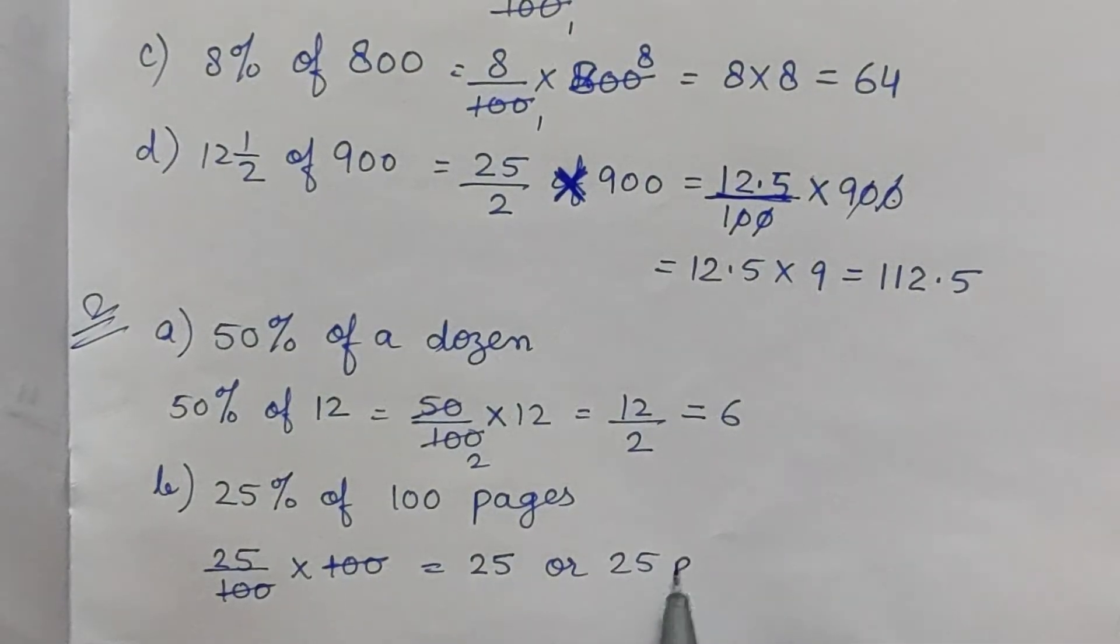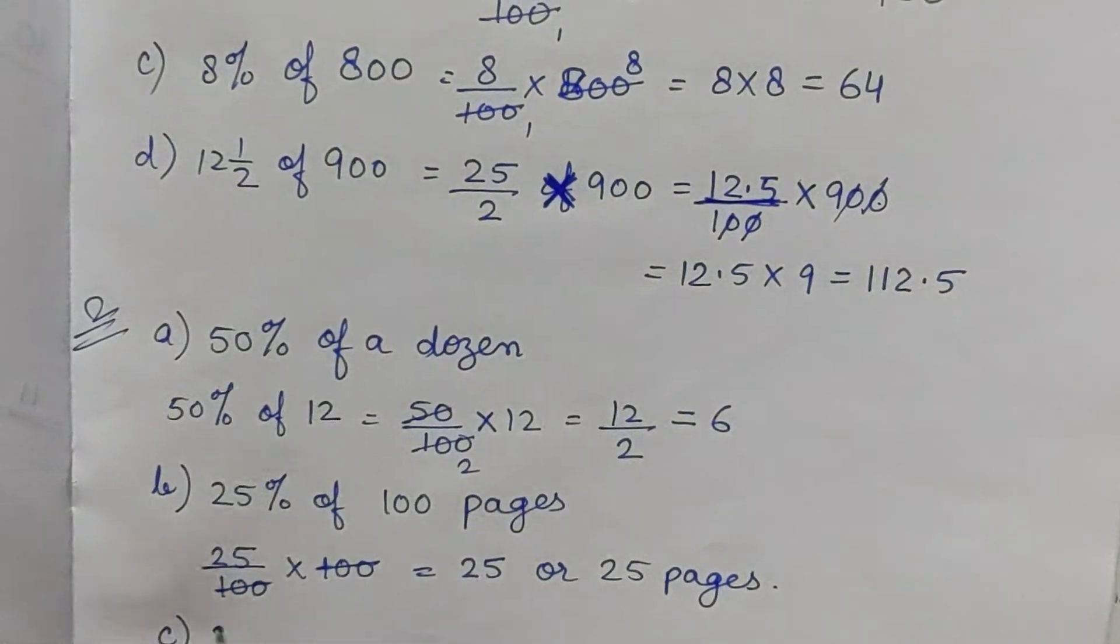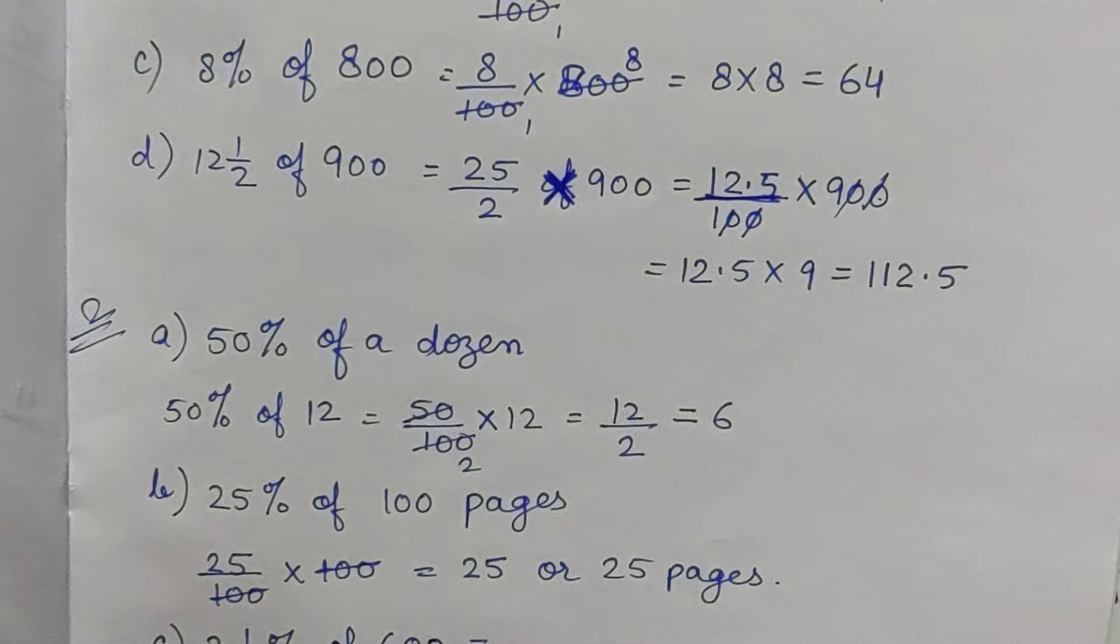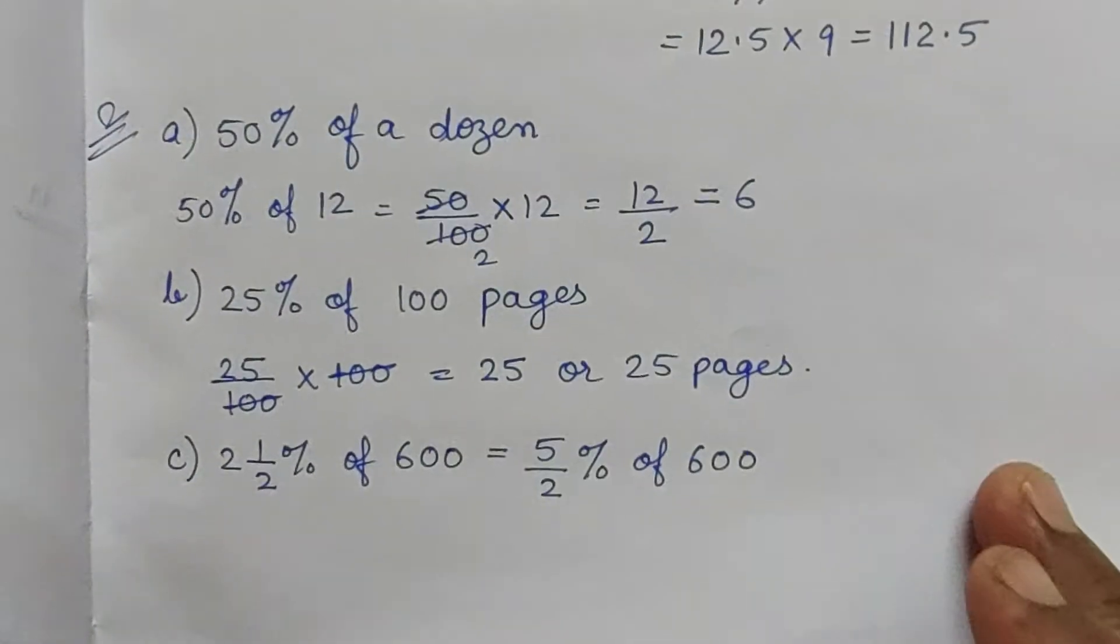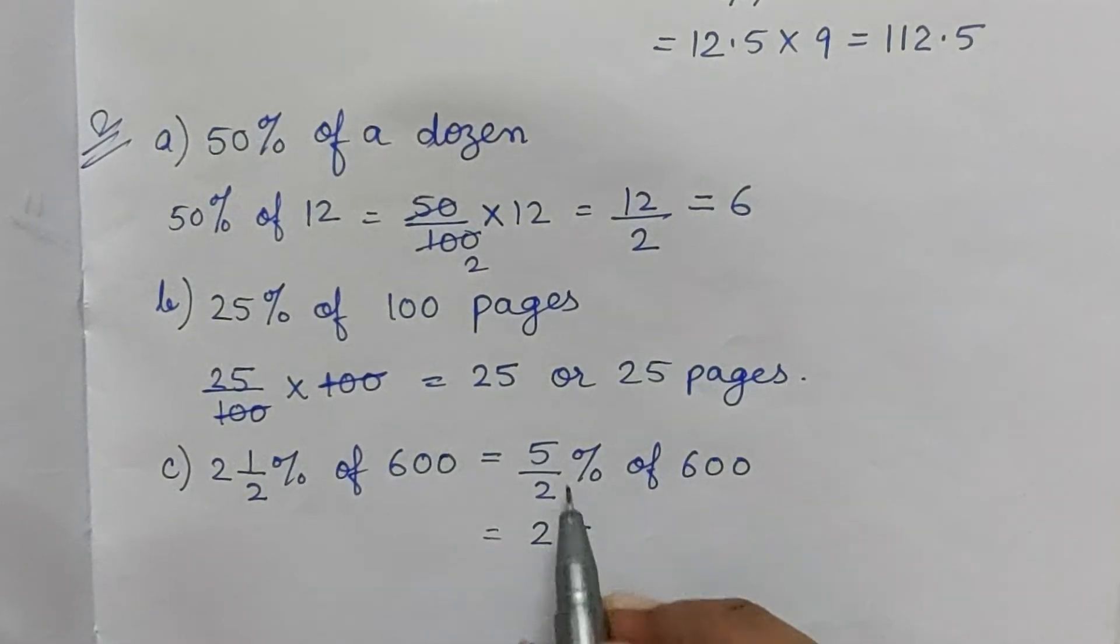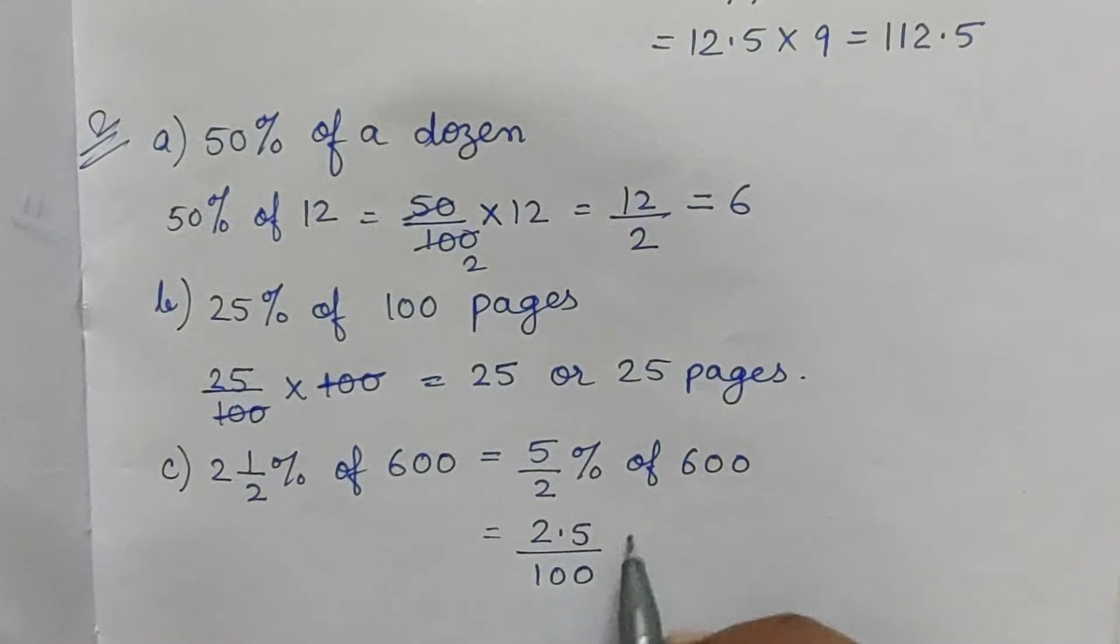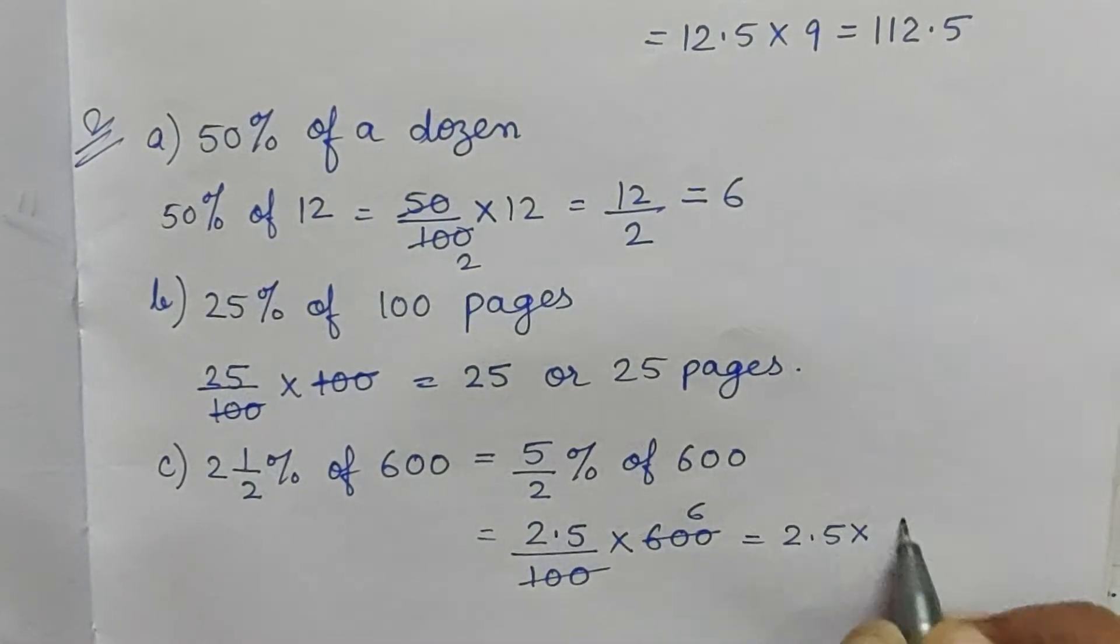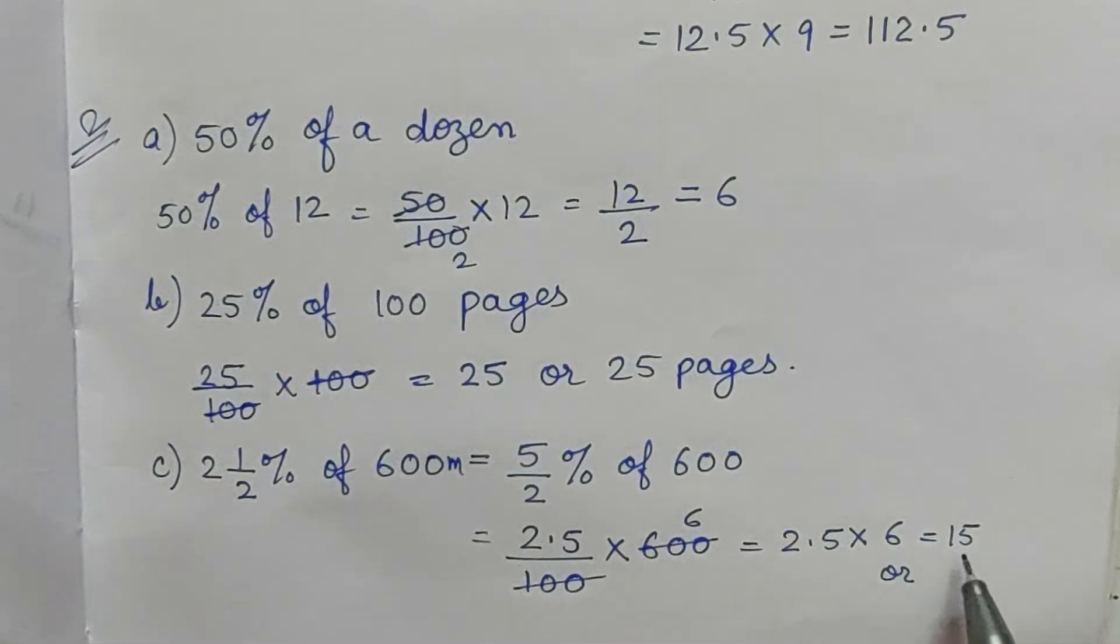Part c: 2 and 1/2 percent of 600. So 2 and 1/2 equals 5 by 2, which is 2.5. So 2.5% equals 2.5 by 100 into 600. 100 into 600 gives us 6, so 2.5 into 6 equals 15. Since it's 600 meters, the answer is 15 meters.